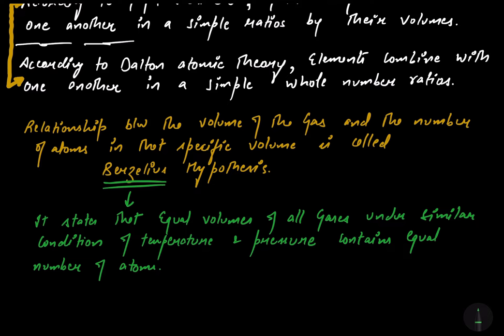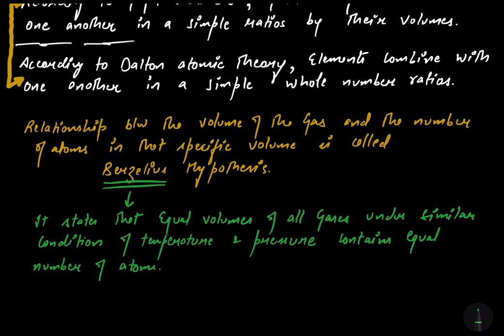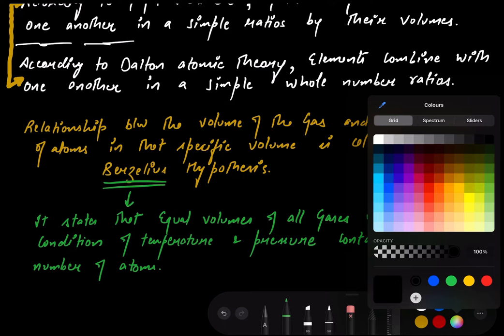The Berzelius hypothesis states that equal volumes of all gases — let me take two gases, oxygen and nitrogen — under similar conditions of temperature and pressure contain equal number of atoms. This point is important: two gases under similar conditions of temperature and pressure will have equal number of atoms.